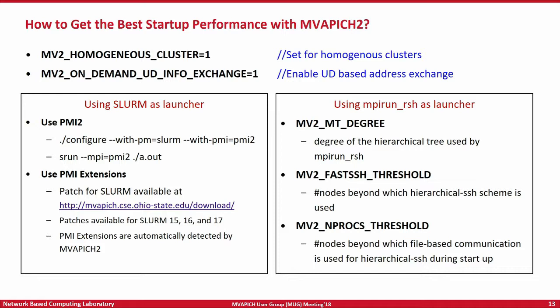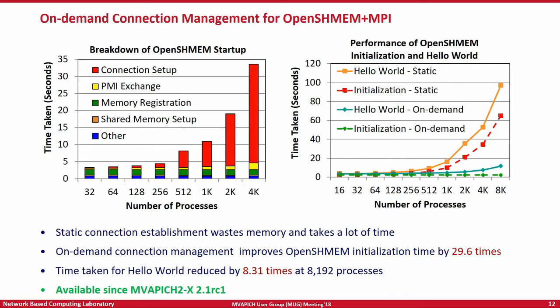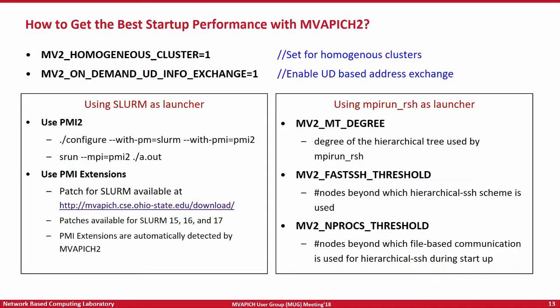We support multiple job launchers. Slurm and our default built-in MPIRUN RSH are two of the more popular ones we support. To get some of the more advanced features, we have patches for various versions of Slurm — 15, 16, 17, and 18 — available for download from our website. You can patch Slurm yourself, rebuild it, and then configure MVAPICH2 with the new Slurm to get the same job startup performance using SRUN, which is Slurm's native job launcher.